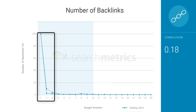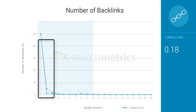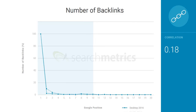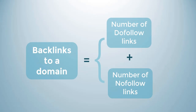The same goes for mobile too, but with a small difference: in the case of mobile, the difference between the second and third search ranking is comparatively more prominent than in desktop search rankings. Total number of backlinks to a domain equals number of dofollow links plus number of nofollow links to that domain.